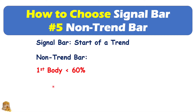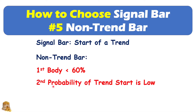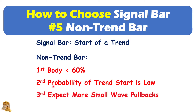The first is that the body is less than 60% of the whole candlestick. The second, the probability of the trend starting is low with a non-trend bar. The third is that a lot of times after the non-trend bar, you can see some small wave pullbacks later on.